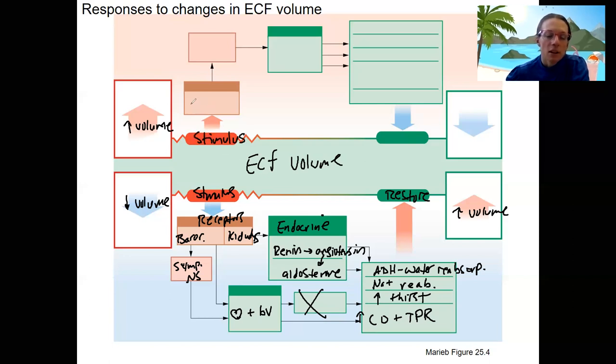Natriuretic peptides. So the atria contains ANP, which is going to be released and target our kidneys, adrenal glands, blood vessels. So let's use that same abbreviation and kidney. These are our targets.